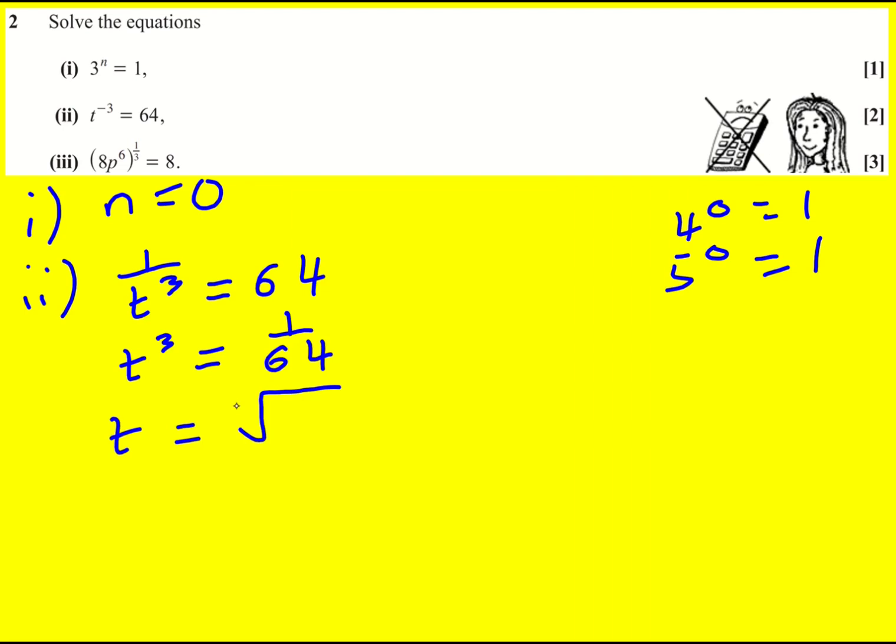That means t is the cube root of 1 over 64, which I can write as the cube root of 1, which is just 1, divided by the cube root of 64. So you need to know your cube numbers: 1, 8, 27. That's 3 cubed. 4 cubed is 64. And therefore the answer is 1 over 4.